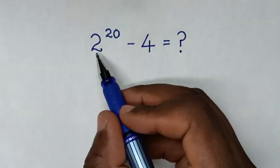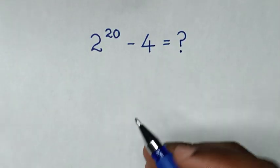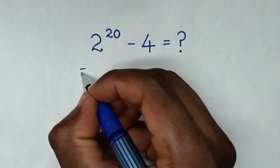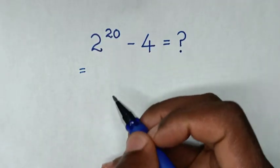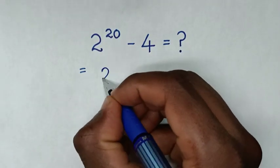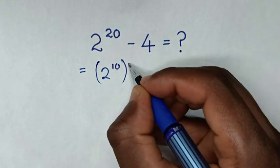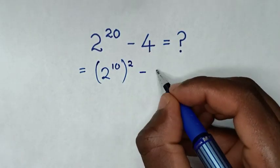Hello, how to solve 2^20 - 4? It will be equal to 2^20 as a square, which is (2^10)^2, then squared minus 4.